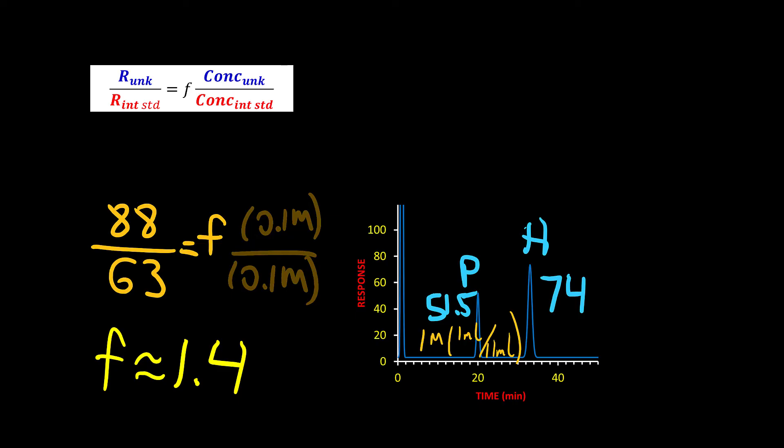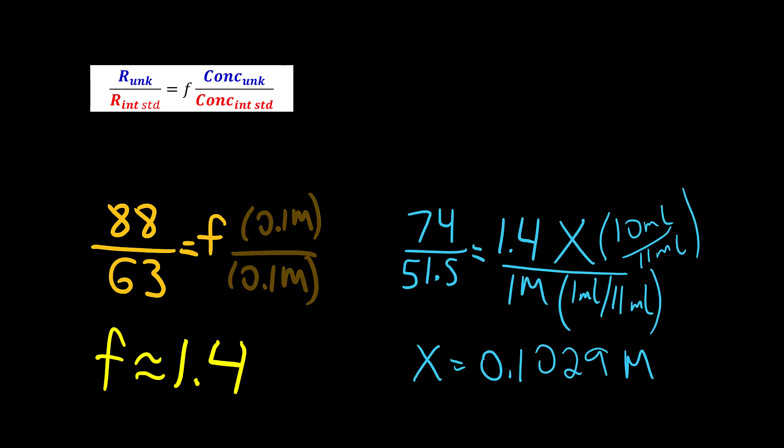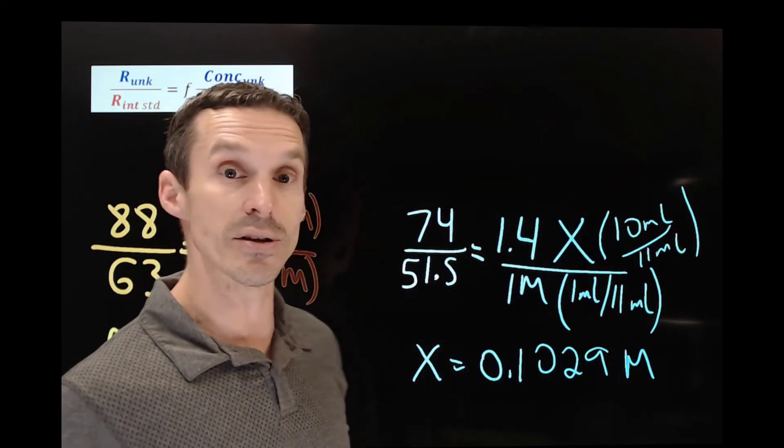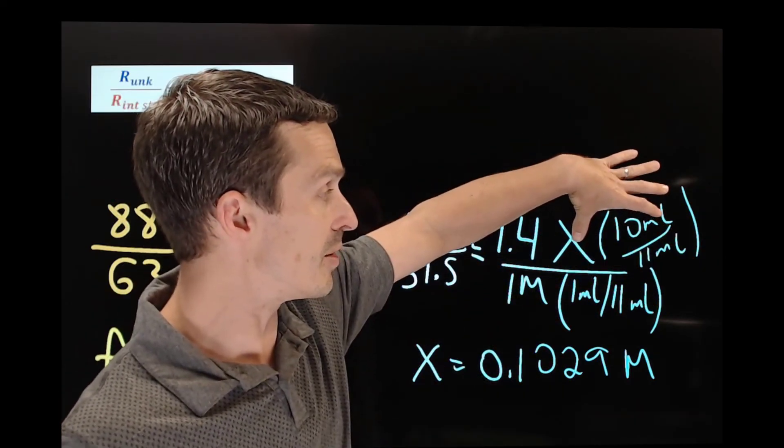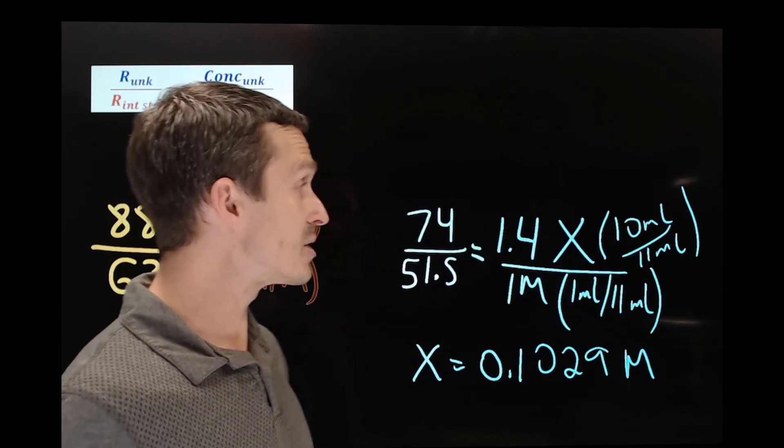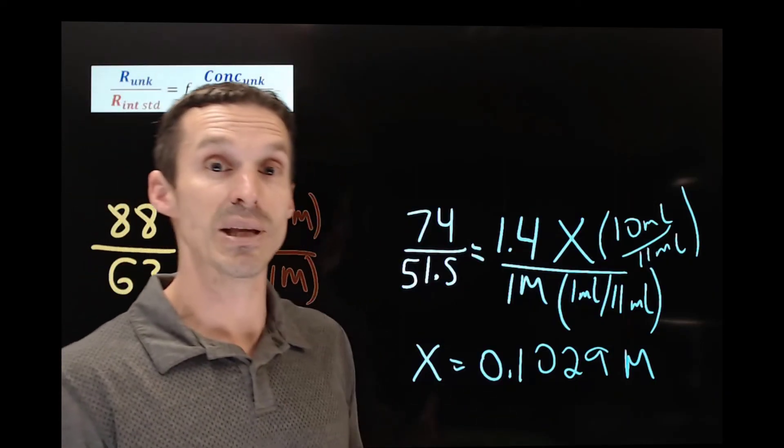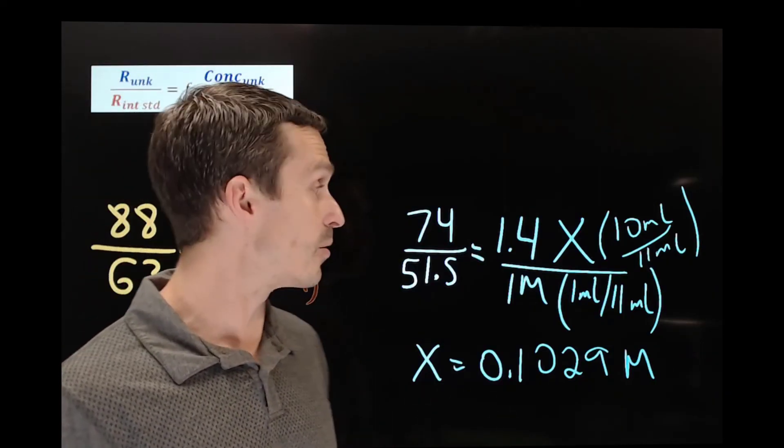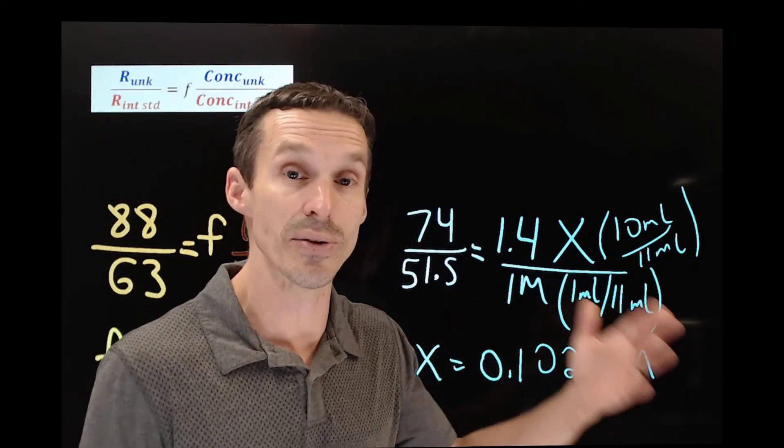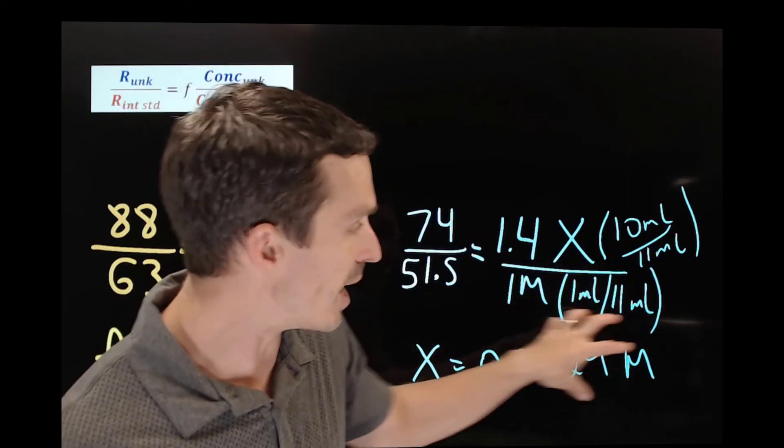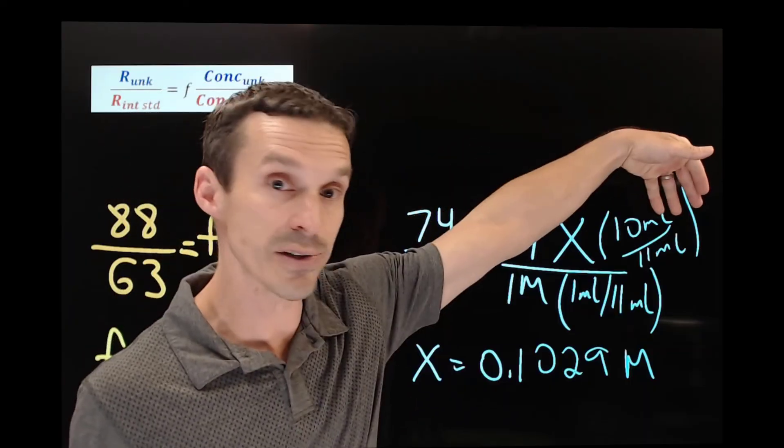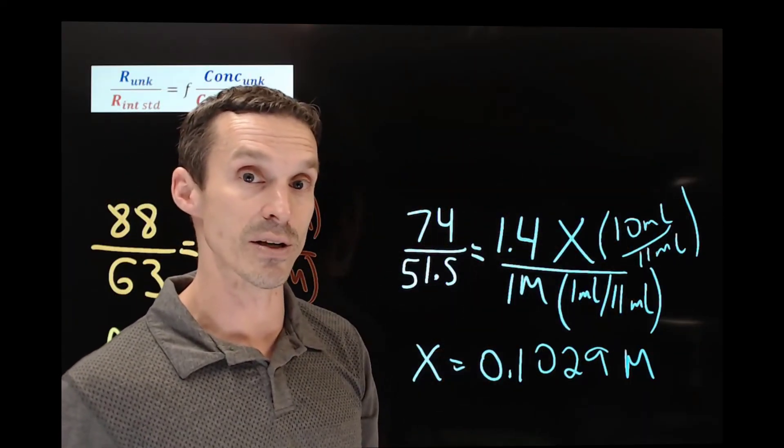I can now use that number and carry it over into the second equation. Now the part of this problem that tends to cause the most confusion deals with the dilution factor. We have our concentration of the unknown divided by the concentration of the internal standard. However, those concentrations have been mixed. They've been diluted, so they've changed from what we actually started them with. We did say that we spiked in 1 ml of 1 molar into 10 mls, so that's 11 mls total. So we have to do this little dilution factor here. And likewise, our unknown sample was also diluted, so we have to do that ratio of volumes as well.